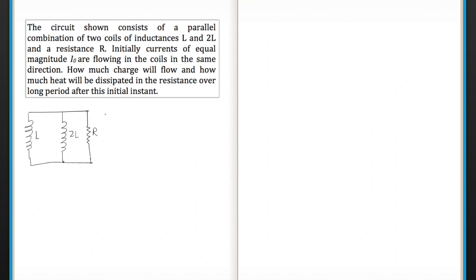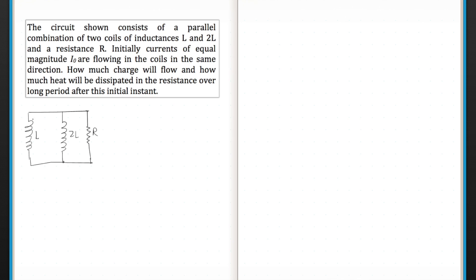Let us analyze this question. In the inductor, initially there was current I₀ flowing in the same direction. Suppose this was the current I₀ and this was the current I₀ — initial current I₀ in both the inductors in the same direction. So we have assumed I₀ and I₀.